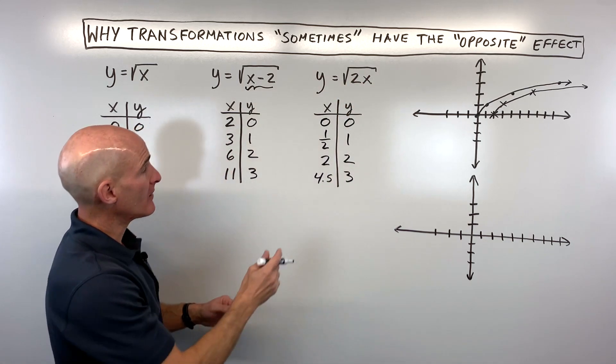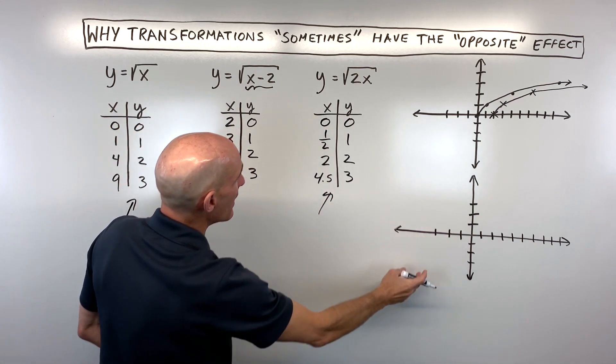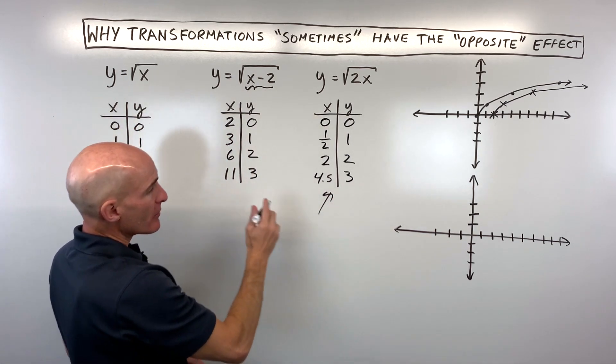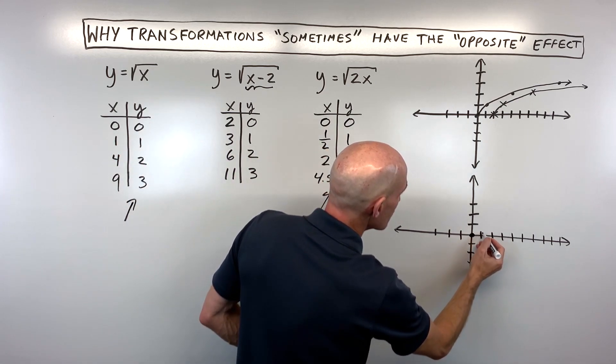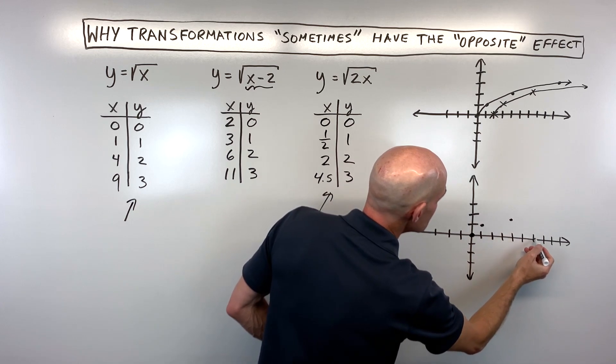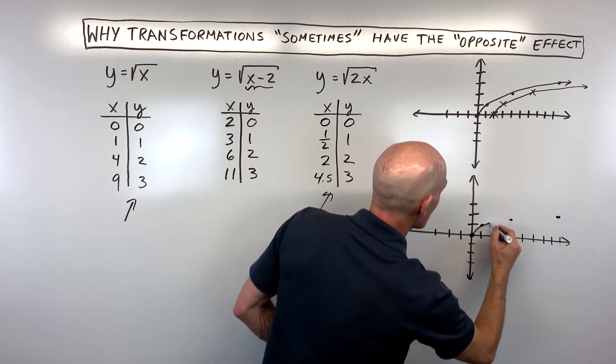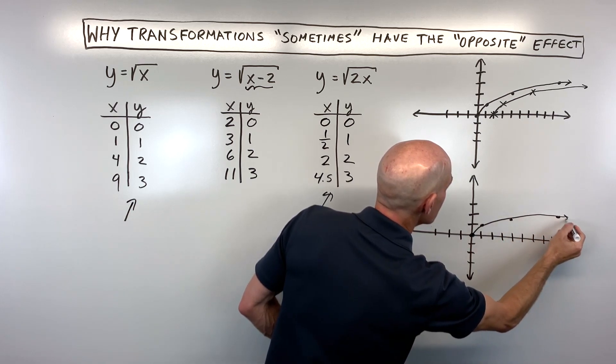Now let's plot this table and the original parent function table on this graph. Starting with the parent function, we've got (0, 0), (1, 1), (4, 2), and (9, 3). There's our original graph.